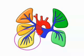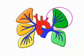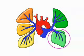In the left lung, the upper lobe has four segments, as does the lower lobe.